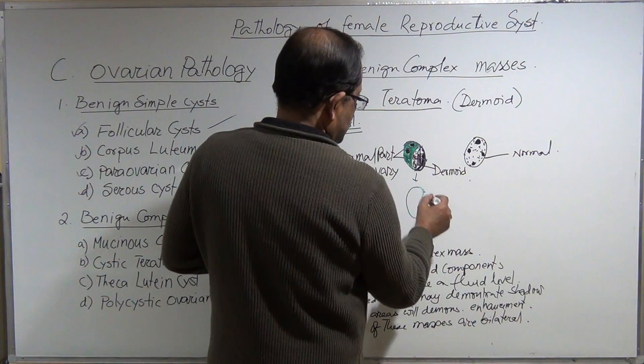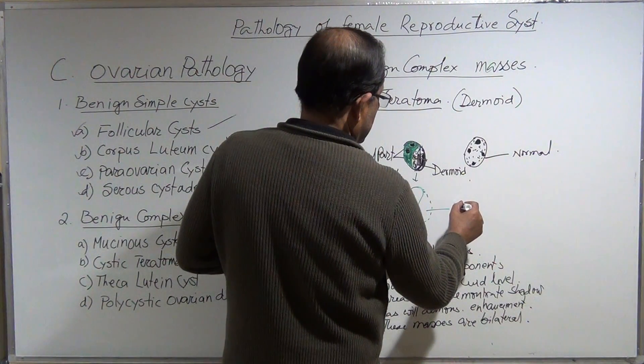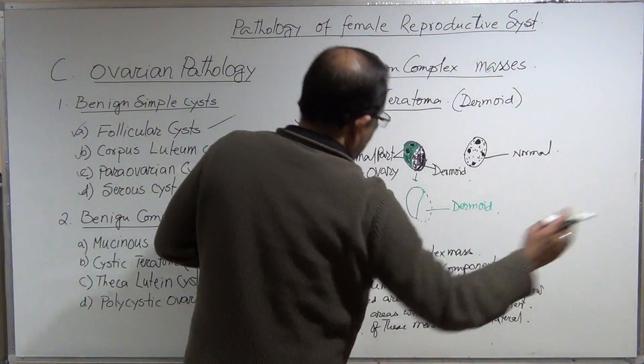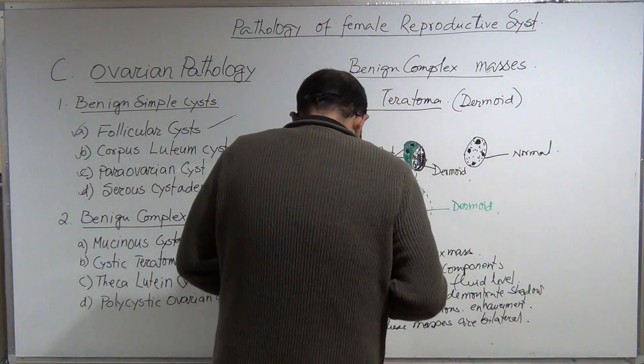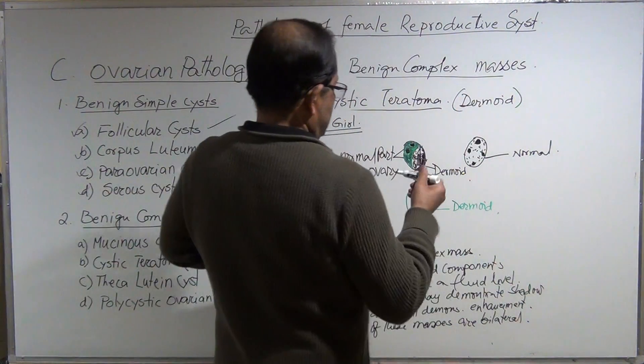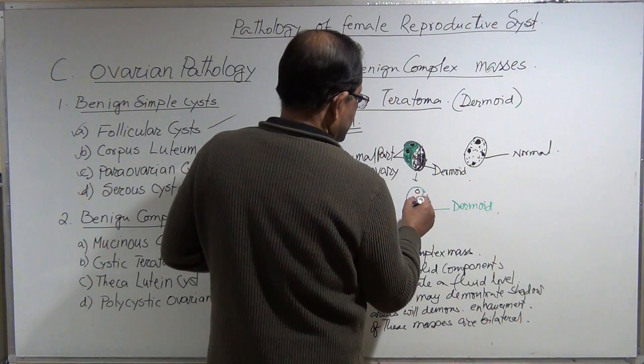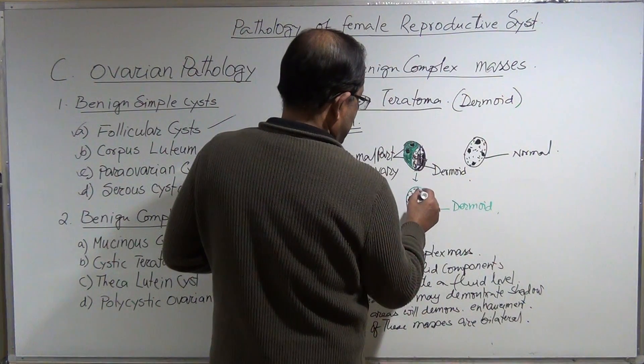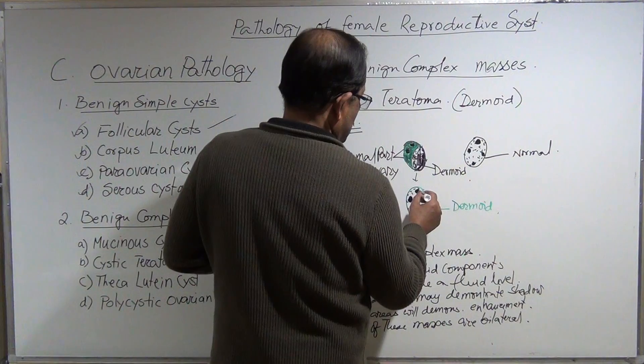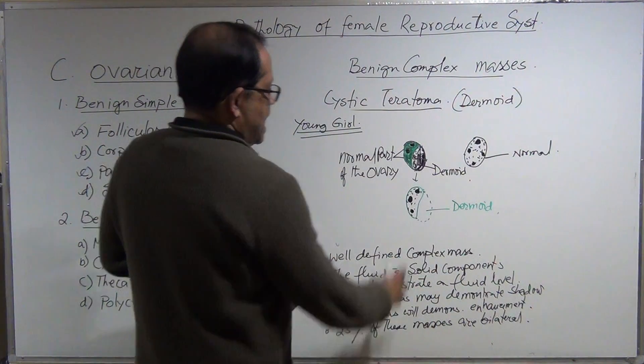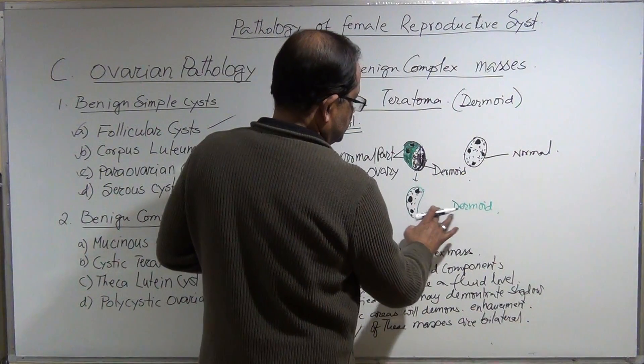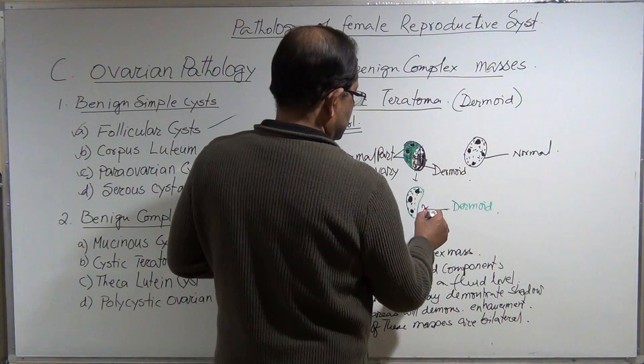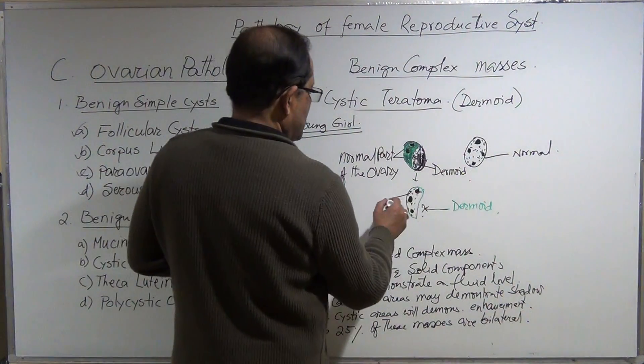So this is the dermoid. This dermoid part will be taken out and the normal ovary is this. They will keep half of the ovary—the normal part of the ovary intact—and this part will be taken out. Dermoid part is gone and this is the normal ovary.